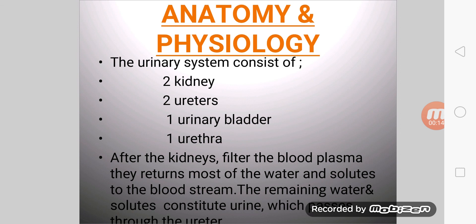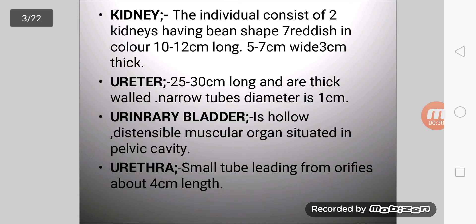The urinary system consists of two kidneys, two ureters, one urinary bladder, and one urethra. After the kidney filters the body plasma, they return most of the water and solutes to the bloodstream. The remaining water and solutes constitute urine, which passes through the ureter.